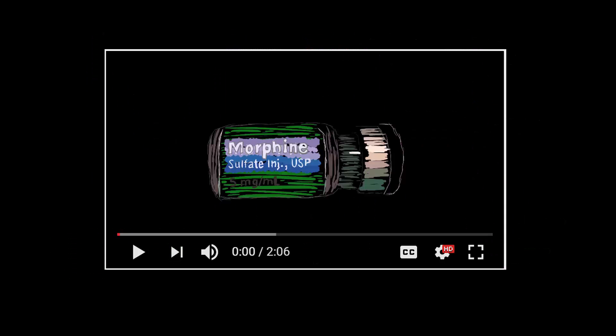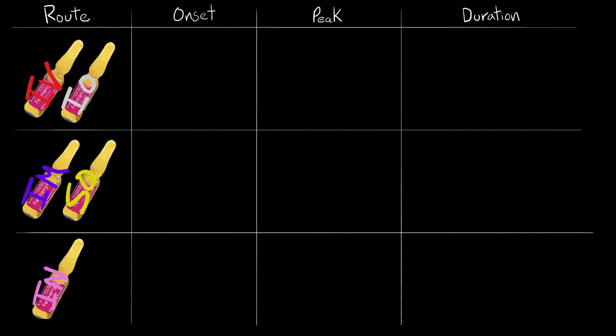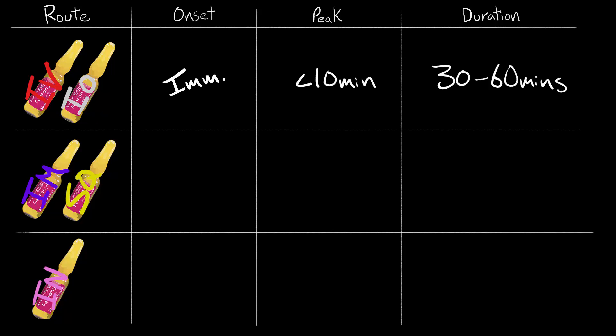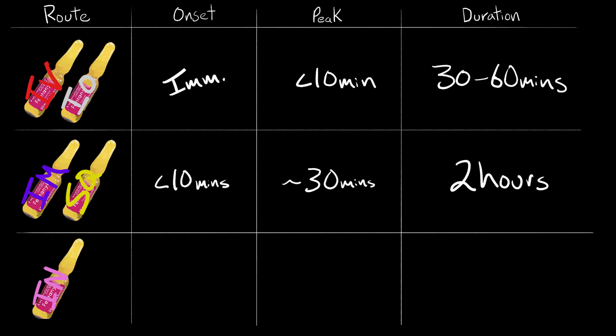Mechanism of action: fentanyl is an opiate analgesic — check out our video on morphine pharmacology for a broad look at how these work. For duration: IV and IO onset is almost immediate, peaking in just under 10 minutes and lasting 30 to 60 minutes. For IM and SQ, onset is just under 10 minutes, peaking in about 30 minutes and lasting up to 2 hours. For intranasal fentanyl, onset is in a couple of minutes, peaks around 10 minutes, and lasts up to 2 hours.